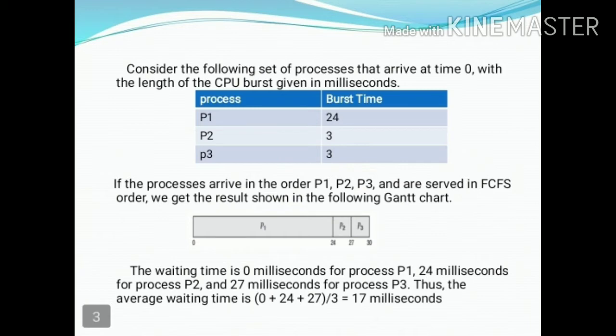P3 is completed after P2. P3 completes at 27 ms. So let us calculate the average waiting time of the three processes: P1 waiting time is 0 ms, P2 waiting time is 24 ms, and P3 waiting time is 27 ms. The average waiting time is (0 + 24 + 27) divided by 3.